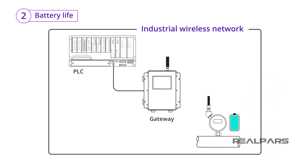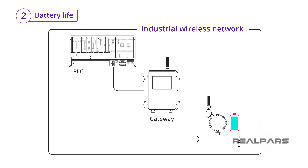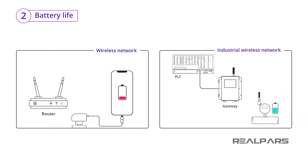Larger files result in more battery use and the need to charge more often. But this is totally different with devices used in an industrial wireless network. An industrial wireless network is designed to send and receive small amounts of data, so the devices — such as wireless sensors and actuators — consume very little battery over a relatively long period of time. As a result, these industrial wireless devices can often operate for years without any need for a battery charge. This is a fundamental difference in battery life between a device used in a typical wireless network such as Wi-Fi, and one used in an industrial wireless network such as IIoT.